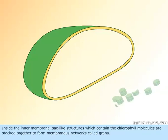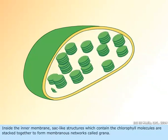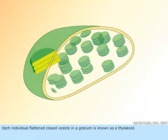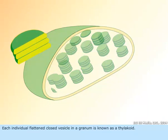Inside the inner membrane, sac-like structures which contain the chlorophyll molecules are stacked together to form membranous networks called grana. Each individual flattened, closed vesicle in a granum is known as a thylakoid.